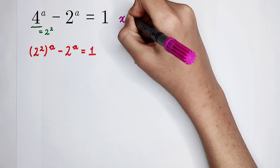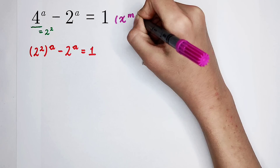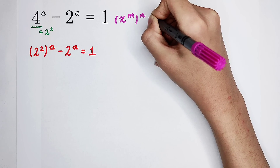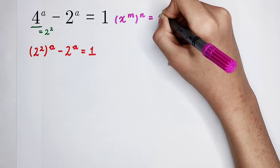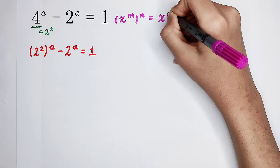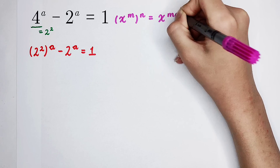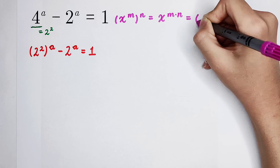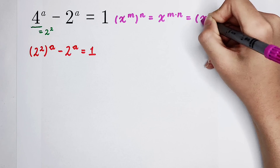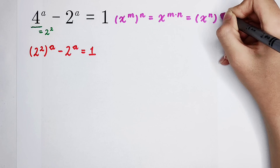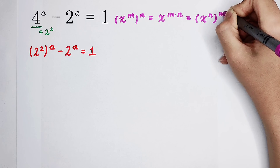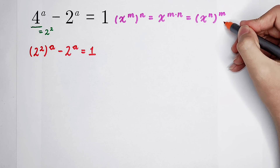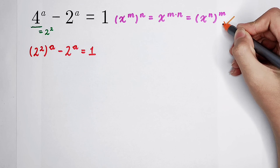Recall the exponent rule: x to the power of m, all to the power of n, is equal to x to the power of m times n. It is also equal to x to the power of n, all to the power of m. Everyone should remember this formula.